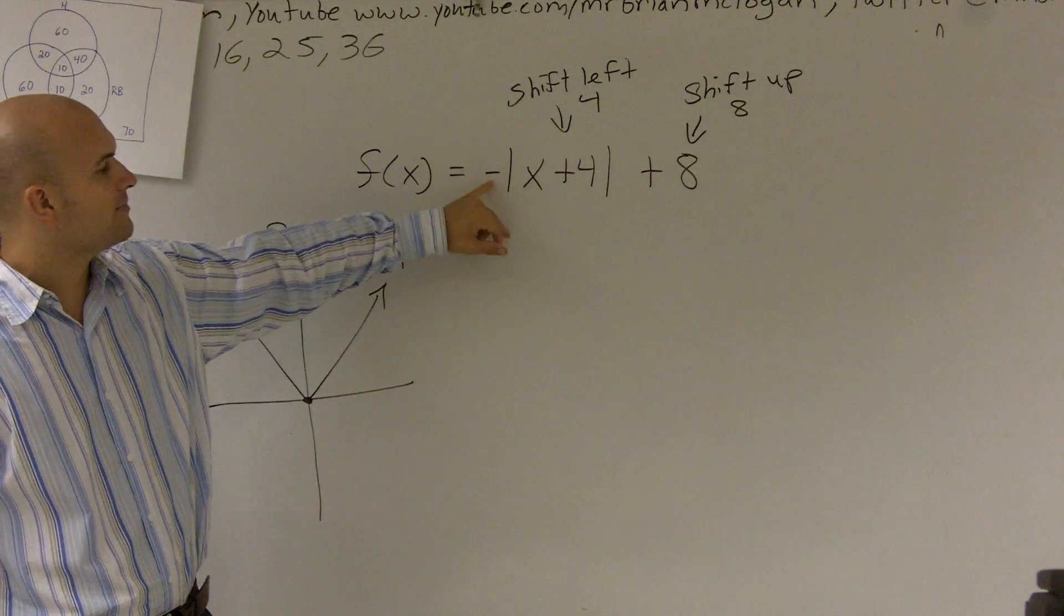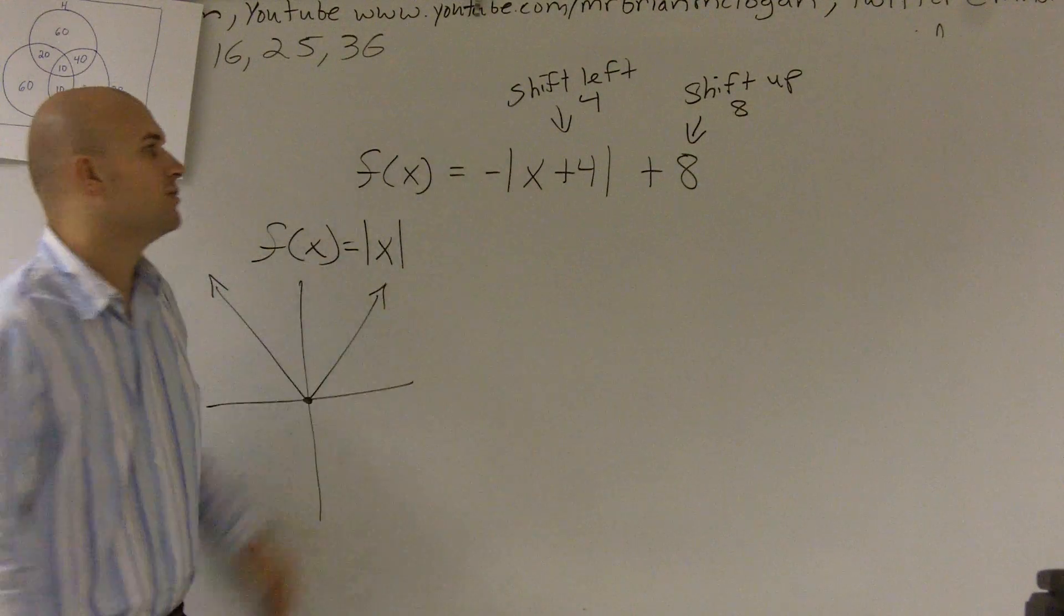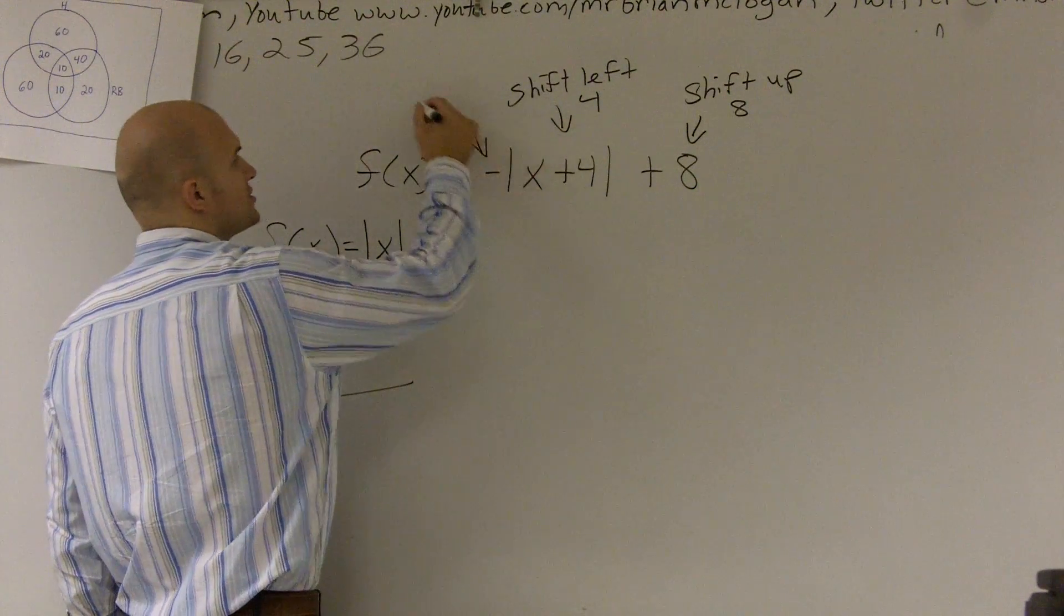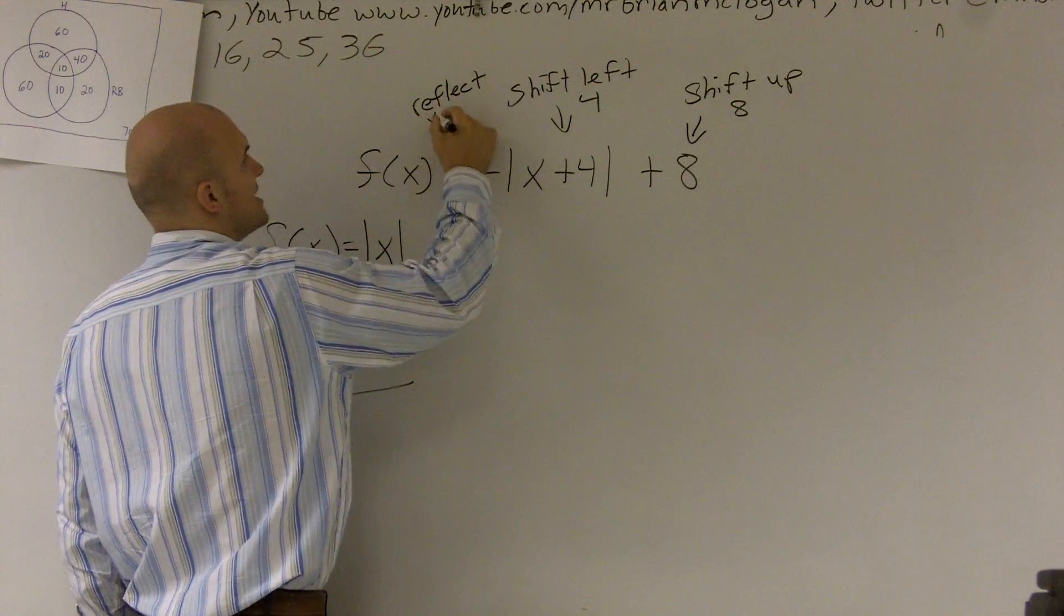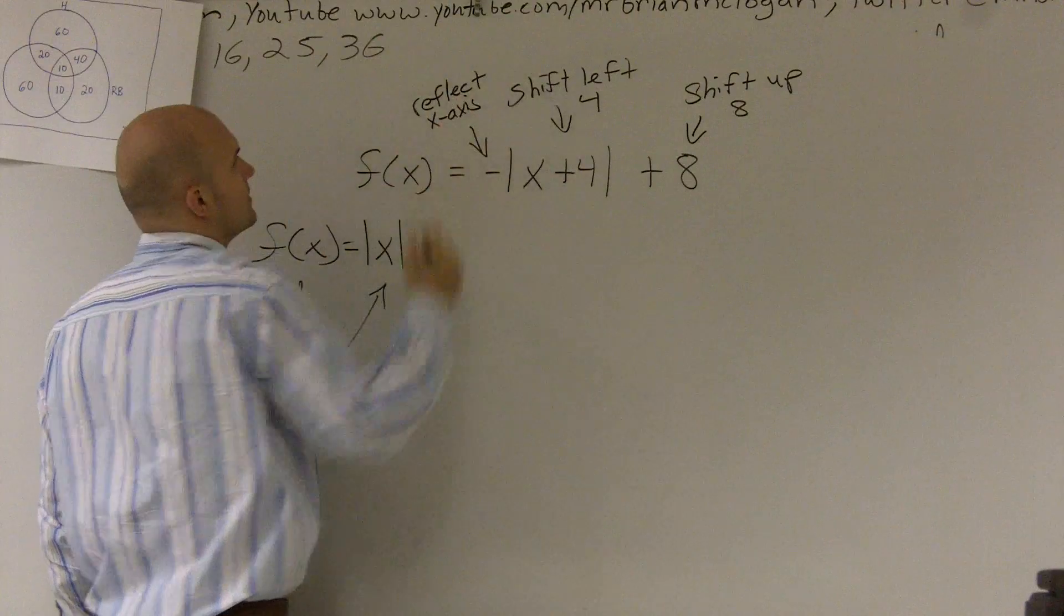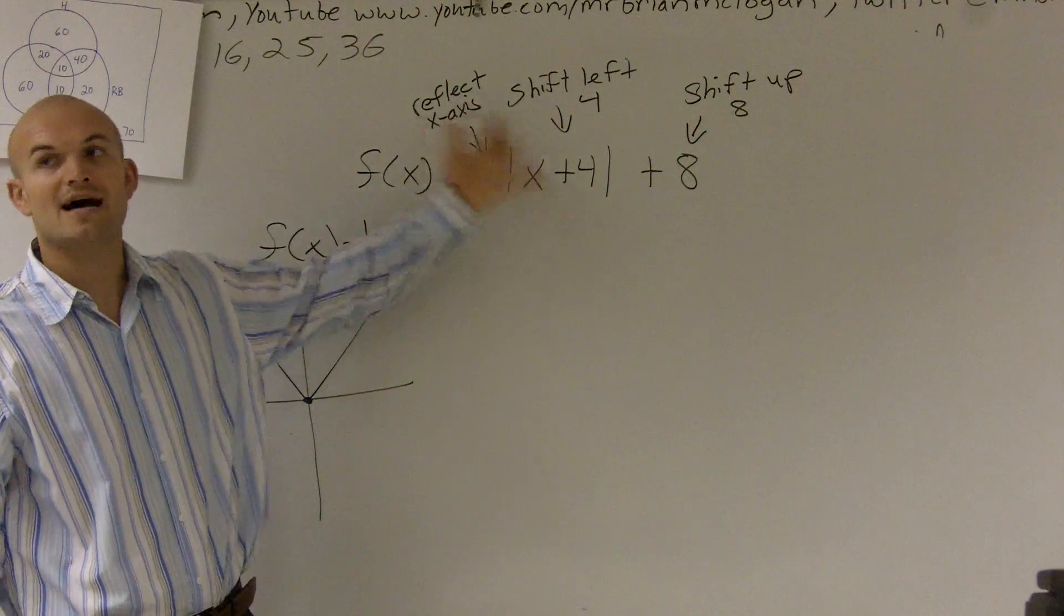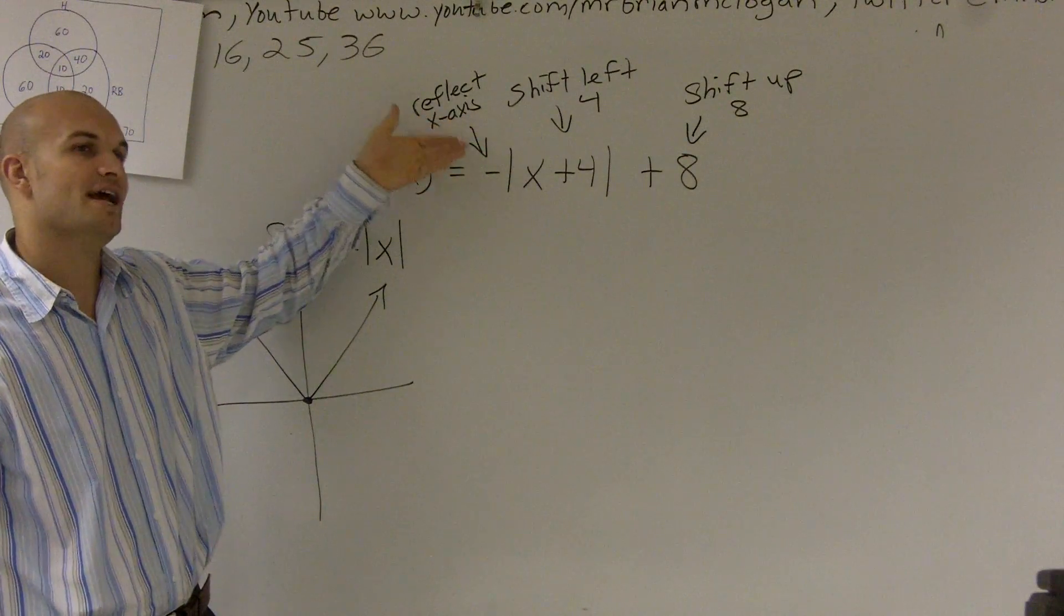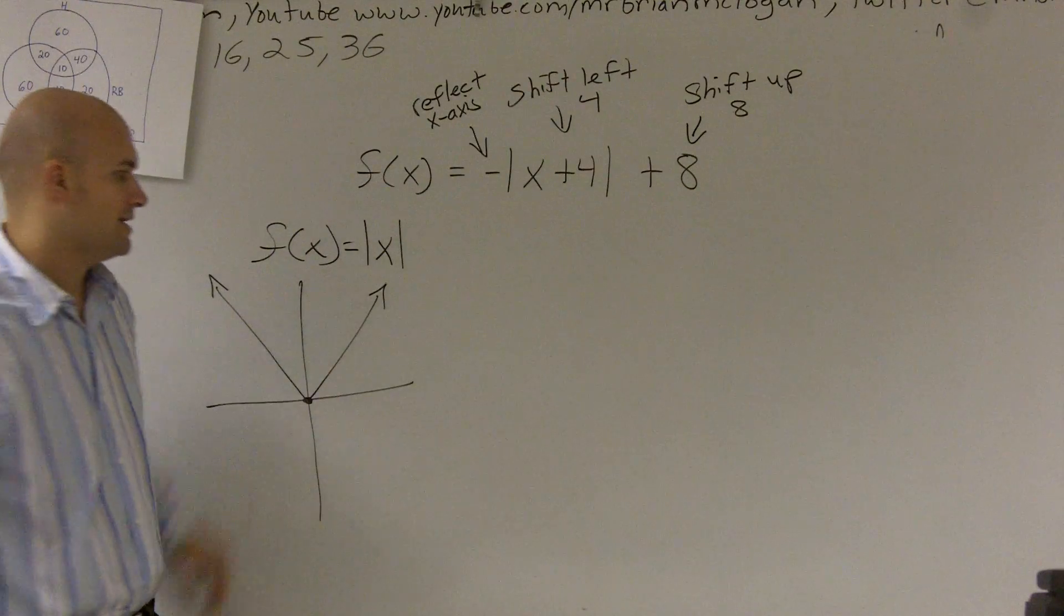And this is like our negative 8. Again, this is outside of our function. So what this is going to do is this is going to reflect over the x axis. And again, what it's doing is, since this is outside of our function, since that negative sign is outside of the function, what that's going to do is that's going to change all of my y coordinates. So instead of my y coordinates being positive, they're now going to be negative.